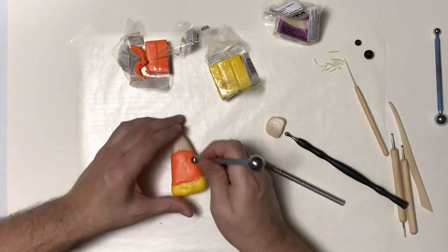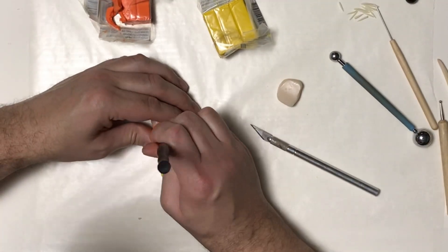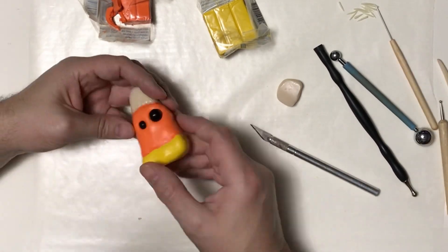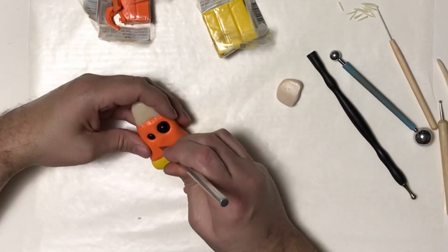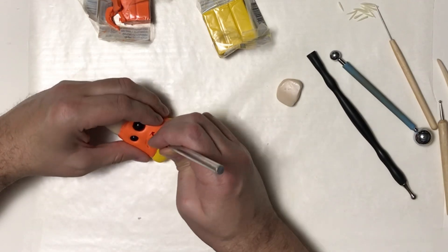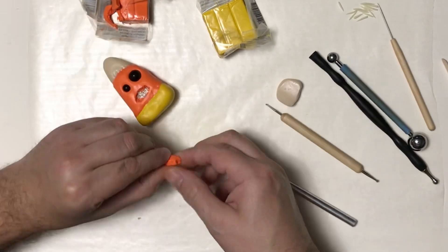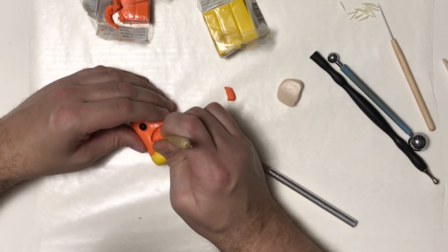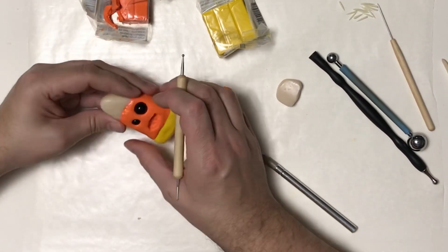Now with that done, I can start sculpting out the spots for the eyes. I'm using two different sizes of black beads, so I did use different ball tools to open up those spots. And now I'm going to cut out for the mouth. I did cut it into where the foil was, so I put a little more orange clay in there.